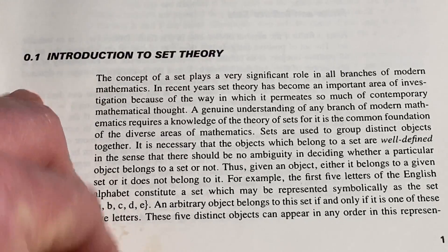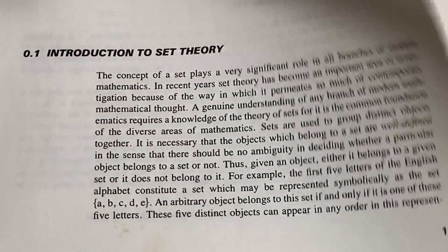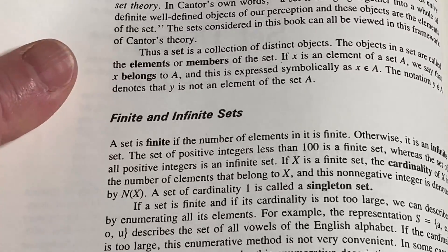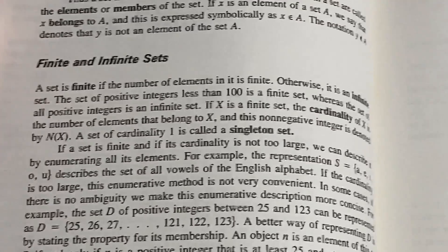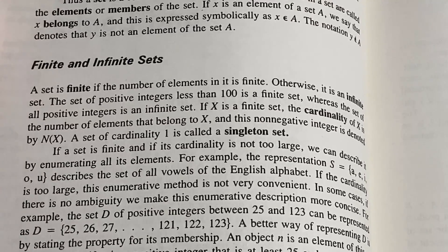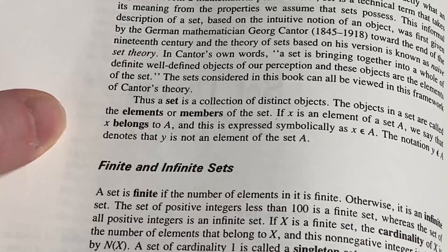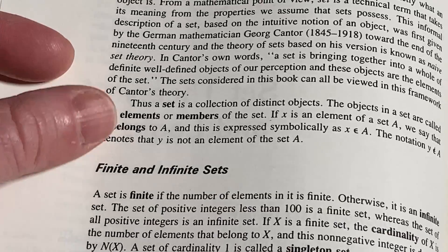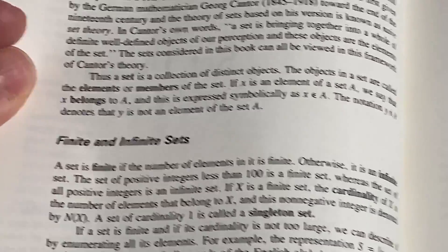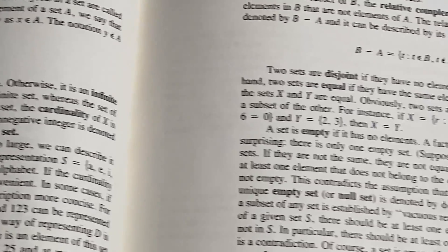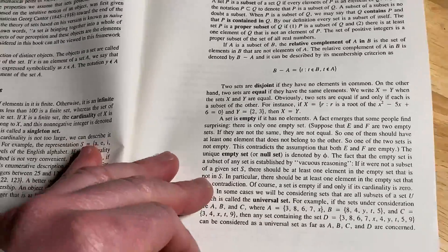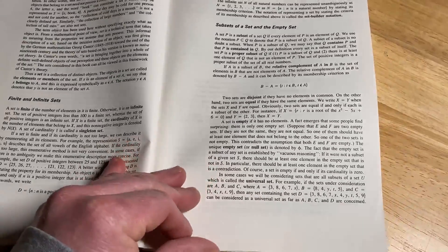It's quite readable. I've read a decent amount of this book. Finite sets — it goes pretty quickly. Every time you see a word in bold, that means it's a definition. Compared to some other discrete math books, it is a little bit more advanced — it's not like the easiest one in the world.